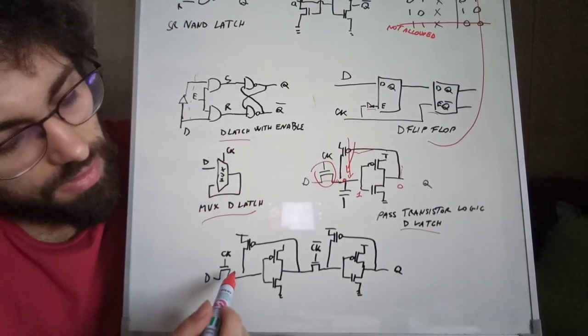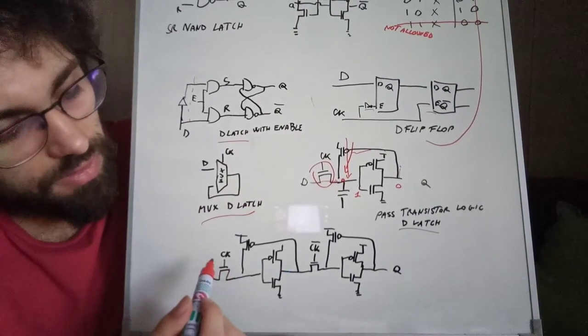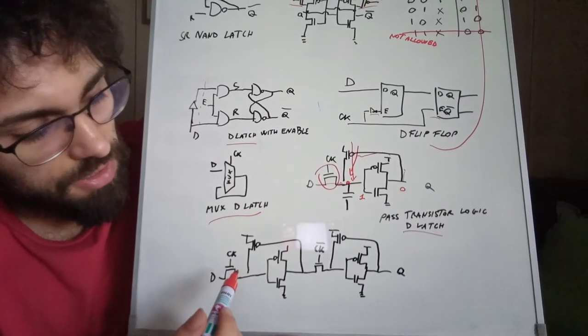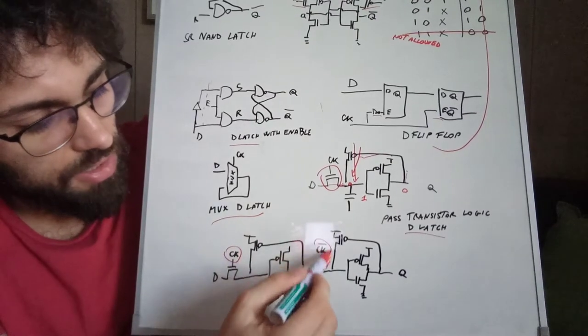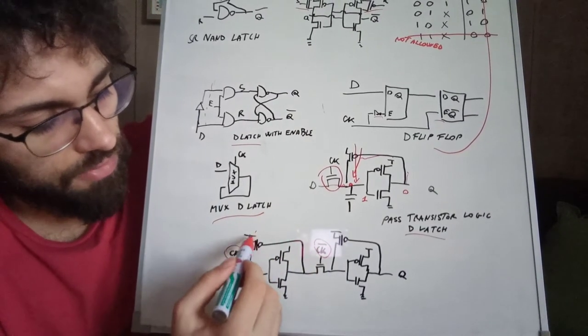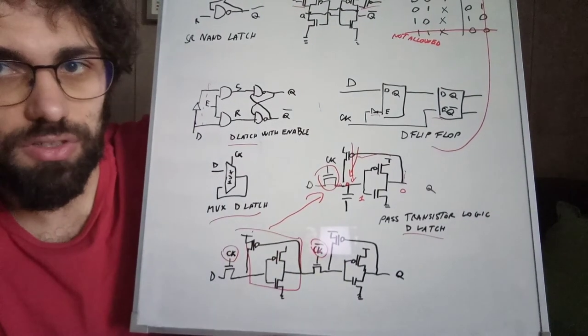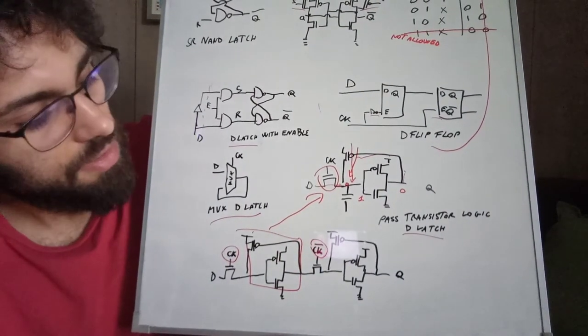And at last, here down at the bottom, an example of the flip-flop implemented with pass transistor logic. So what you have to notice is that here we have a clock and the clock inverted, and here is exactly this implementation that I discussed before connected with this type of configuration connection.